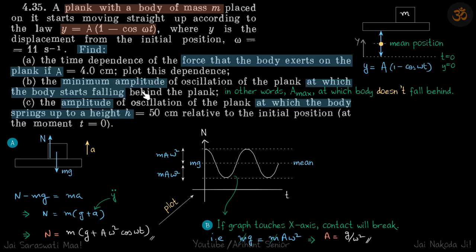For the second part, we find the minimum amplitude at which the body starts to fall off the plank. Equivalently, this is the maximum amplitude at which the body does not fall. When amplitude is small, the body and plank stick together; when amplitude is large, the body falls behind.